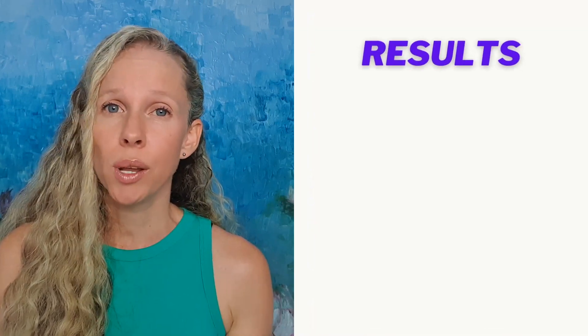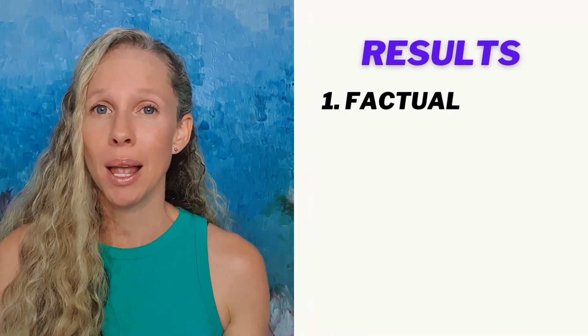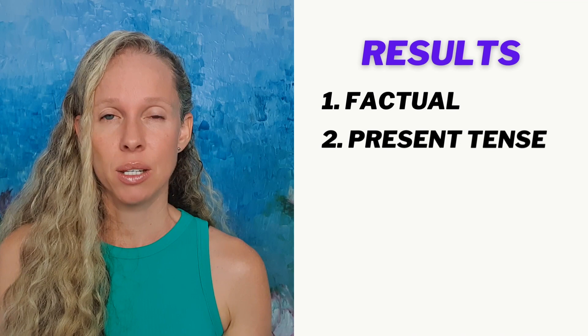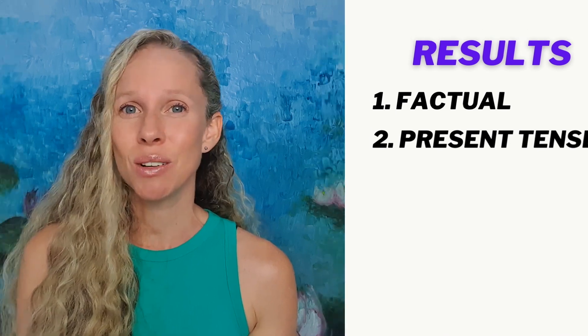After you finish your methods section you can begin writing your results section, which pretty much writes itself. It's also written in a factual and blunt manner. We're not providing opinions or implications of our study here. However, your results section should be written in the present tense, and that's because your results haven't changed.